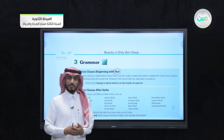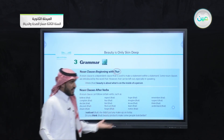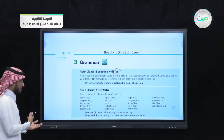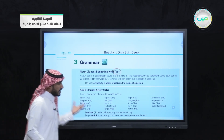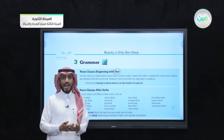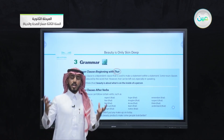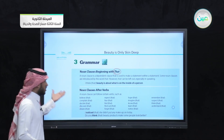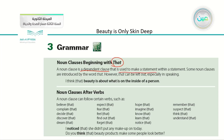We mentioned that noun clauses come after verbs, and we have a list of verbs like believe, complain, decide, discover, dream, and so on. We defined the noun clause as a statement or clause that comes within the statement itself — it's a dependent clause used to make a statement within a statement. It has more than one way of usage.